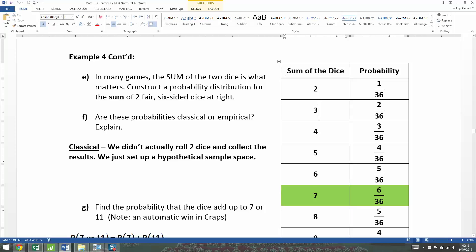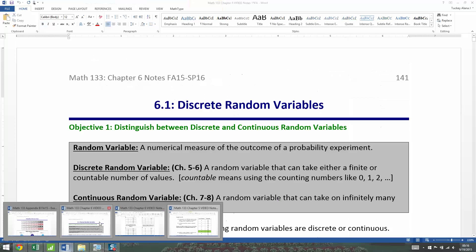And it's a variable because it contains a numerical measure of the outcome. So x could be 2, x could be 3, x could be 4, 5, and so on. That's a numerical measure of the outcome of the dice. So that's what a random variable looks like.